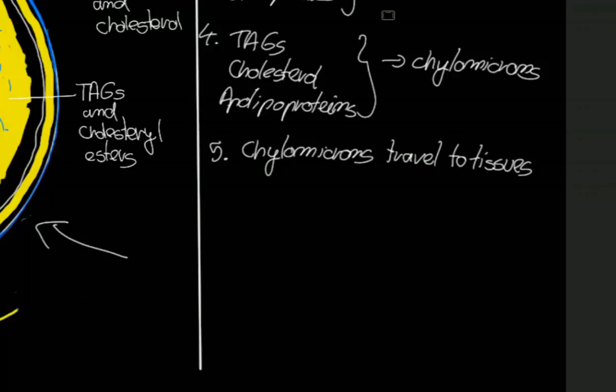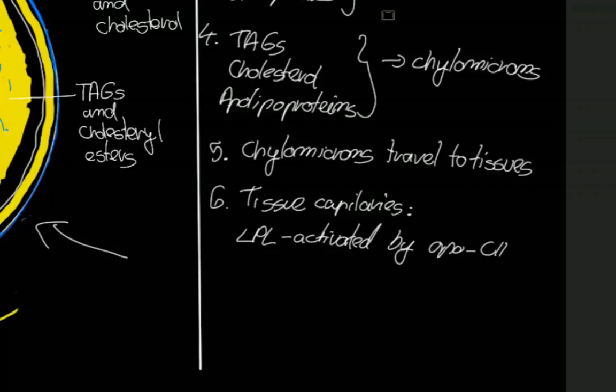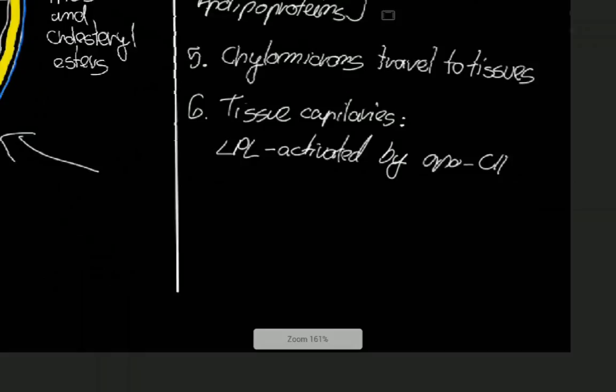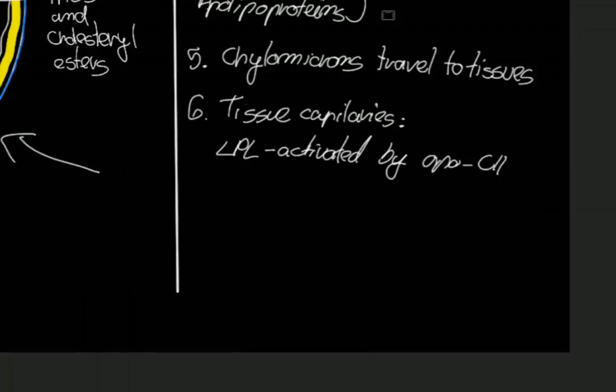And in the capillary of tissues we have lipoprotein lipase or LPL, which is activated by apoc2 from the surface of the chylomicron and converts triglycerides or hydrolyzes triglycerides into fatty acids and glycerol. So in tissue capillaries, step 6, we have lipoprotein lipase which is activated by apoc2 which stands on the chylomicron over here, and this allows for the hydrolyzation of triglycerides into fatty acids and glycerol.